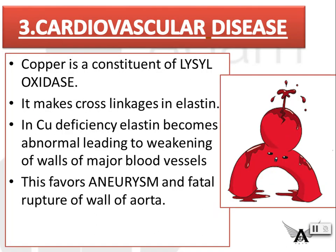Cardiovascular disease: copper is a constituent of lysyl oxidase, which makes cross-linkages in elastin. In copper deficiency, elastin becomes abnormal, leading to weakening of the walls of major blood vessels. This favors aneurysm — aneurysm is nothing but bulging of vessels — and can cause fatal rupture of the wall of the aorta.